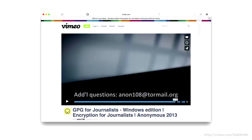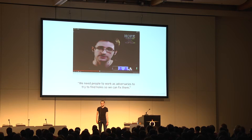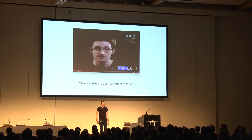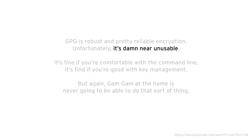Snowden is so kind to say, after 12 minutes, if you have any remaining questions, please contact me. At this year's HOPE conference, Snowden actually did a call for arms. He said we need people to evaluate our security systems, we need people to do Red Team work. But in addition to that, we also need to look at the user experience issue. This is a transcript of his manifesto, and he says GPG is really damn near unusable. You might know command line and be okay, but getting someone at home — she's never going to be able to use GnuPG.